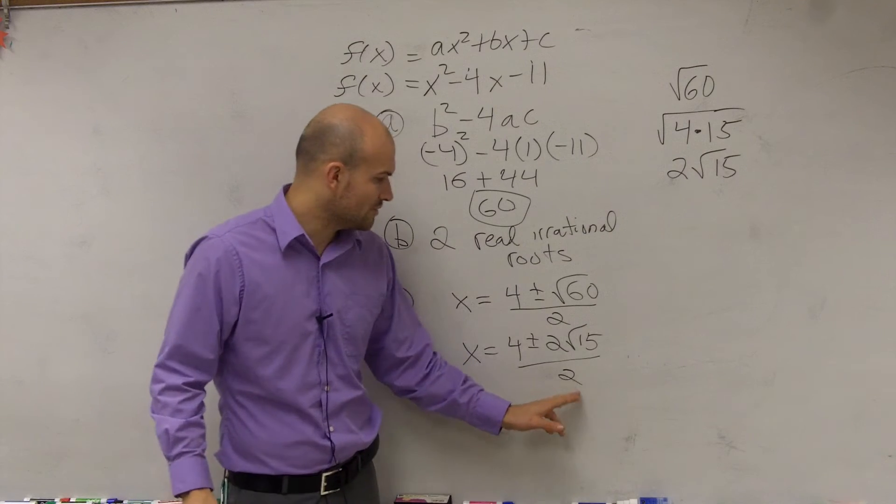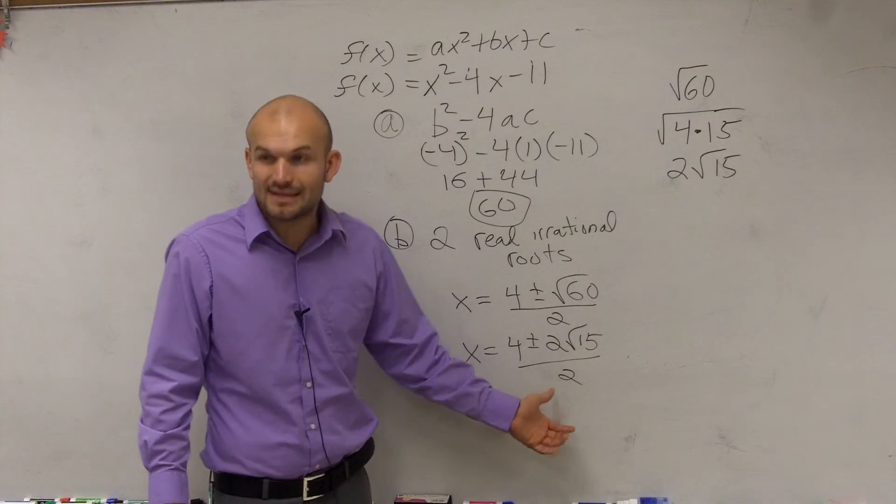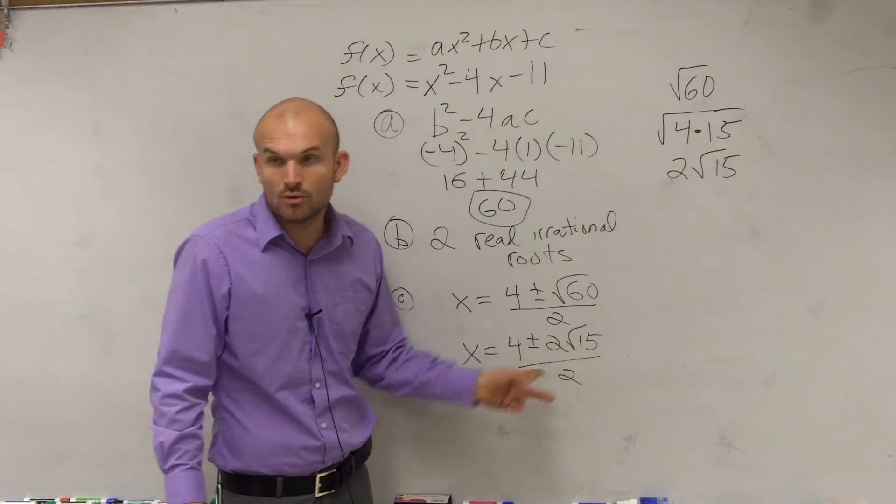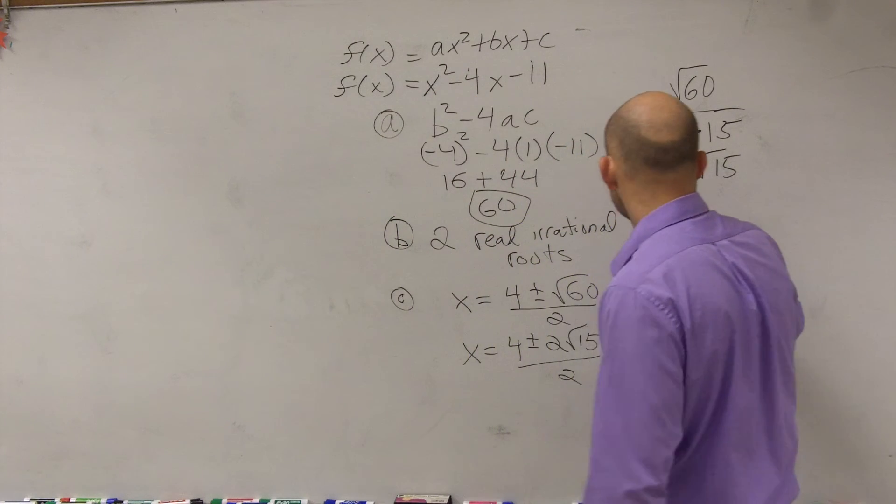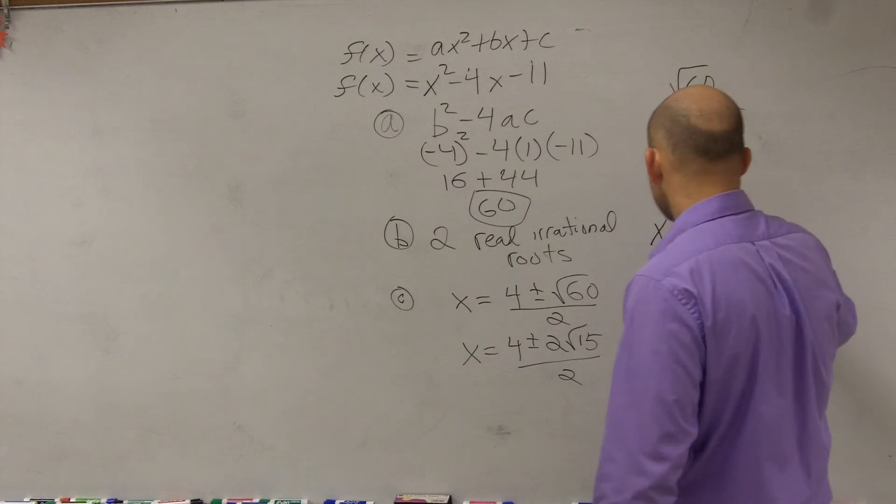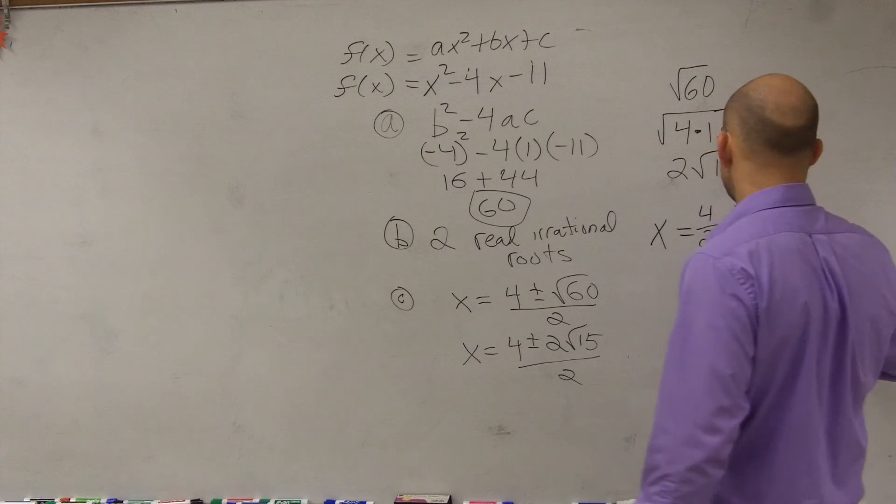Now, remember, this 2 is divided into both of these terms. So remember, you guys, remember we did complex numbers? You could write that 2 under both of those. So let's just write it out there so you guys can see what the answer would look like. So let's say I did it like this. 4 divided by 2 plus or minus 2 square root of 15 divided by 2.